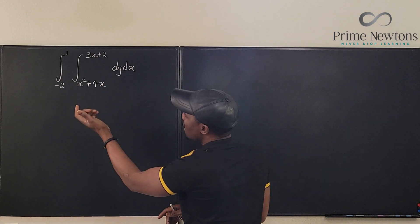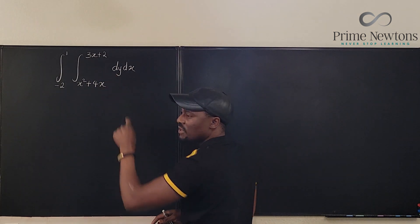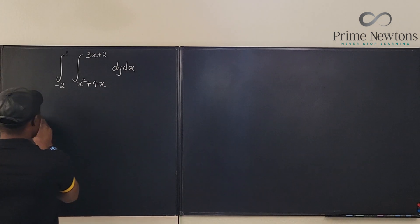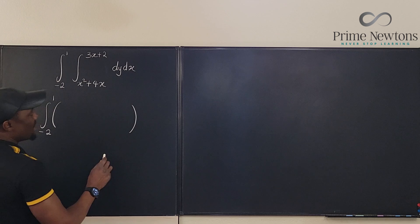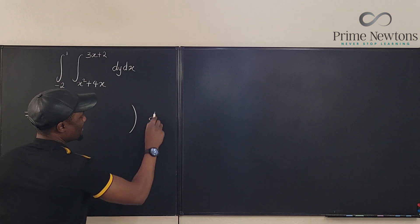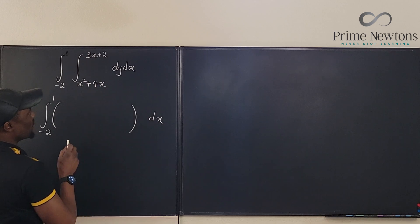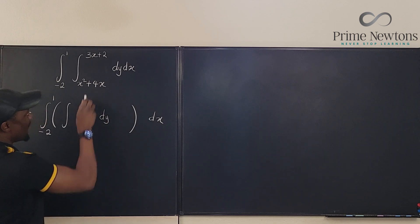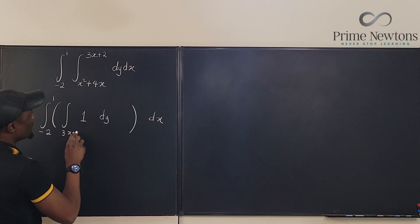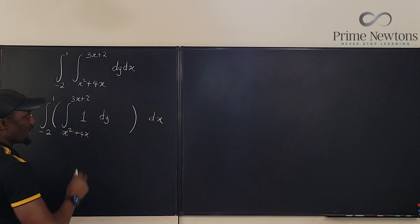Now, what are you going to integrate with respect to? Well, you don't see anything here. You're going to assume there is a one there. So, what we have here is equal to the integral from negative two to one of, now we're going to integrate. Whatever we integrate, we're going to have dx at the end of it. So, we're going to integrate. So, let me just write it. You're going to be integrating one dy. So, just assume you have one here, dy. And the bounds of the integration will be 3x plus 2 and then you have x squared plus 4x here as the lower bound. So, now, let's do this integration.